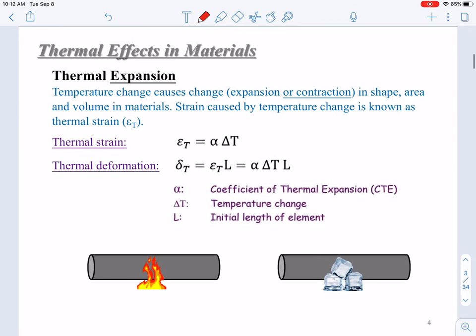In mechanics of materials or physics, we use coefficient of thermal expansion to describe the thermal expansion behaviors of materials. Temperature change causes change, either expansion or contraction, in shape, area, and volume in materials. The strain caused by temperature change is known as thermal strain, εT.